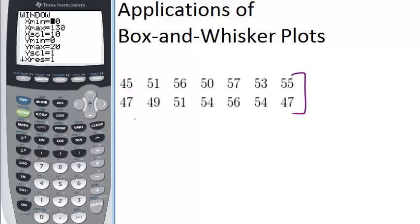These numbers are all between 40 and 60. So that means I could make my X min 40 and my X max 60. I could make it a bigger range if I wanted, but the important thing is that it at least includes those numbers.